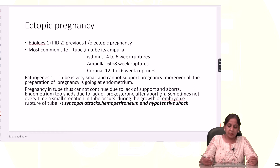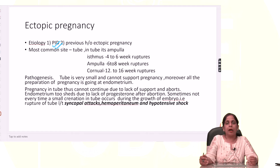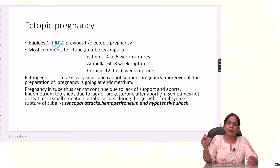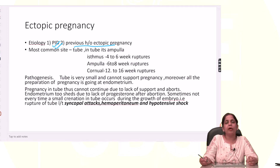The factors for ectopic pregnancy are: PID — pelvic inflammatory disease. If there is a pelvic infection, then after fertilization it is difficult for the embryo to move and get implanted in the uterus. Second is a previous history of ectopic pregnancy. If it was the first ectopic, there are again chances of ectopic pregnancy because the tube conditions remain the same.